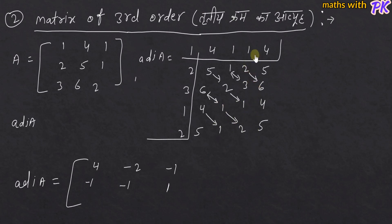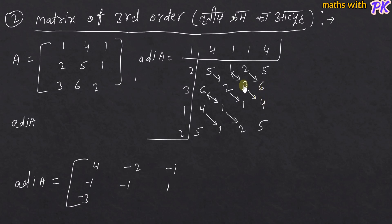तीसरा कॉलम: 2×6 = 12 minus 3×5 = 15, तो 12 minus 15 = -3। तीसरी रो में -3 आएगा। उसके बाद: 3×4 = 12 minus 6×1 = 6, तो 12 minus 6 = 6। और 5 minus 4×2 = 8, तो 5 minus 8 = -3।